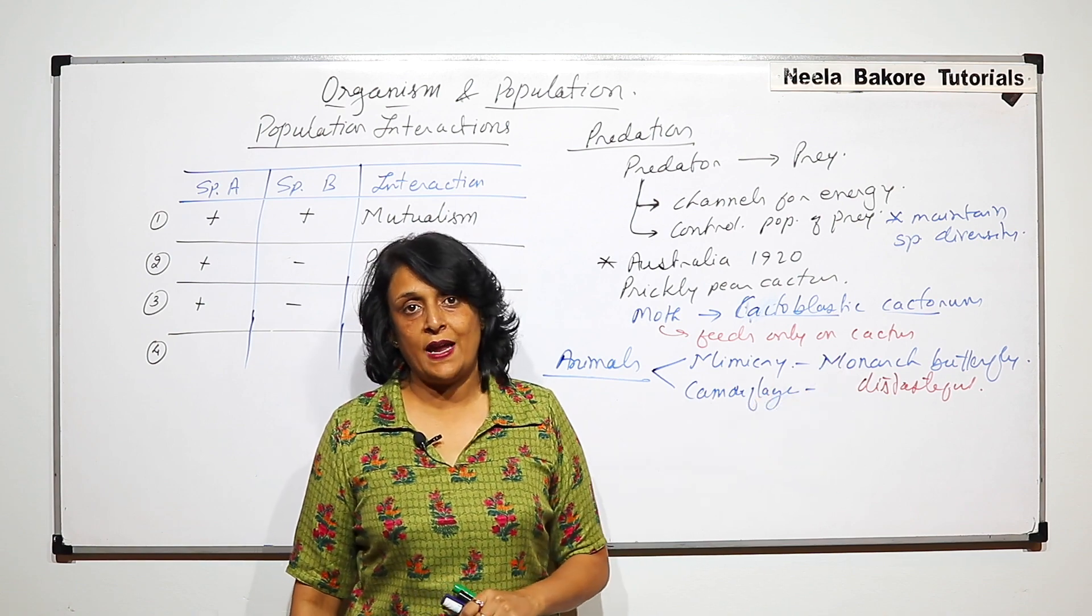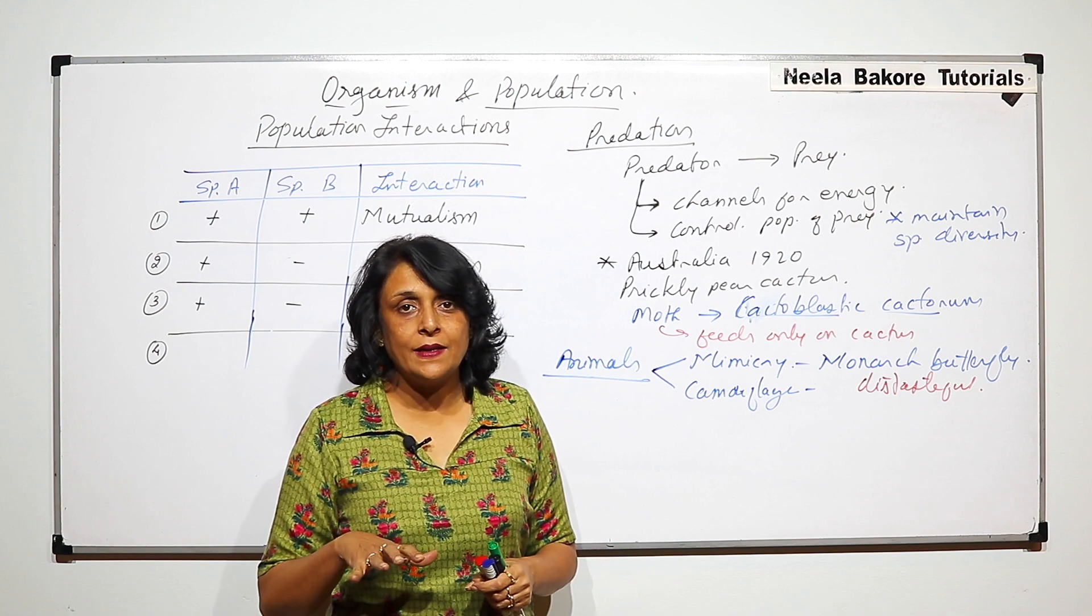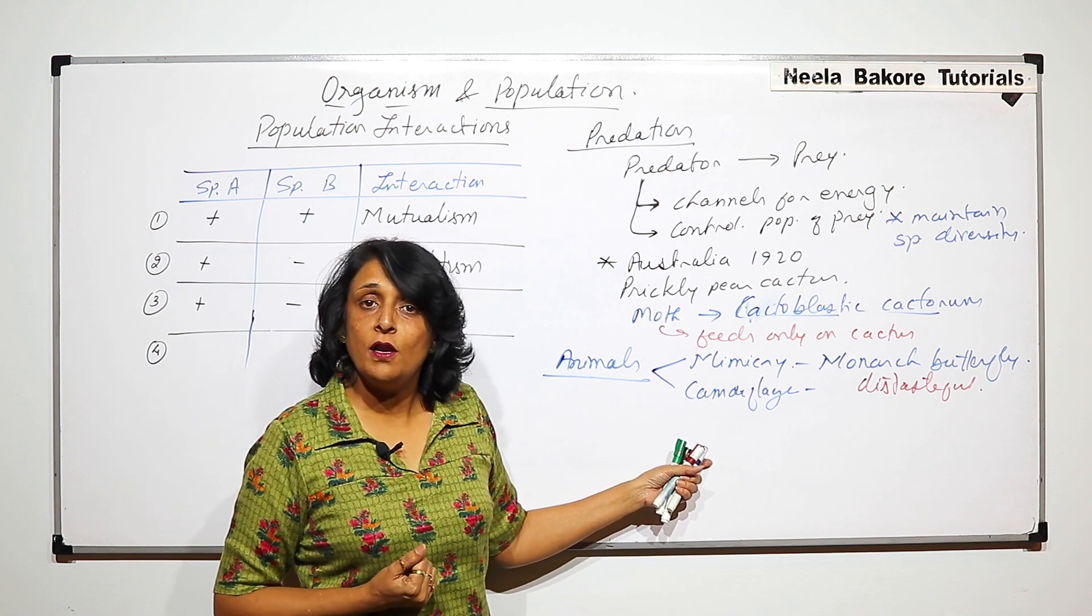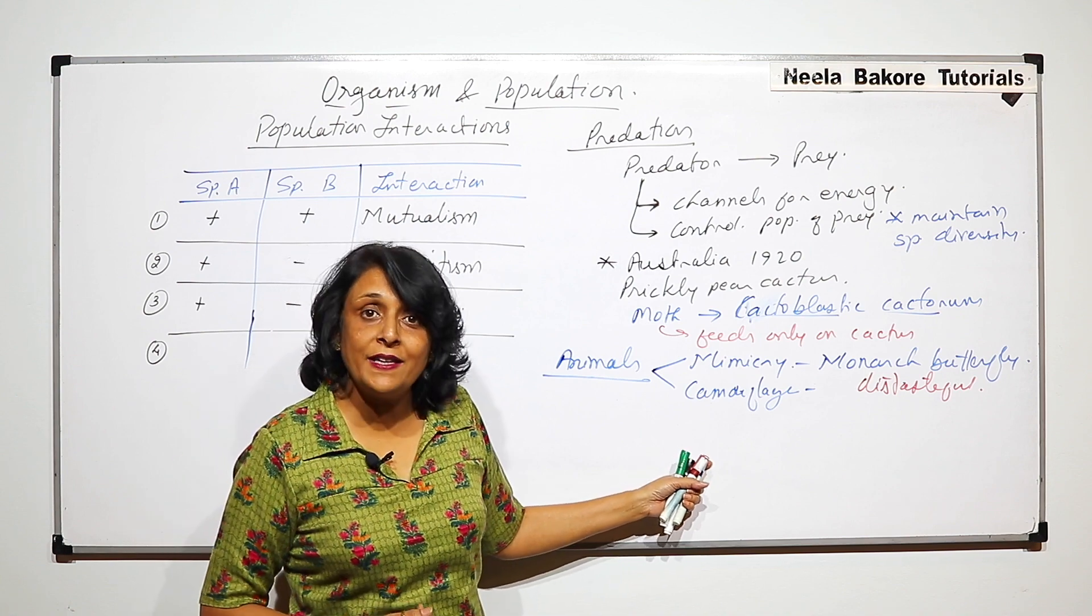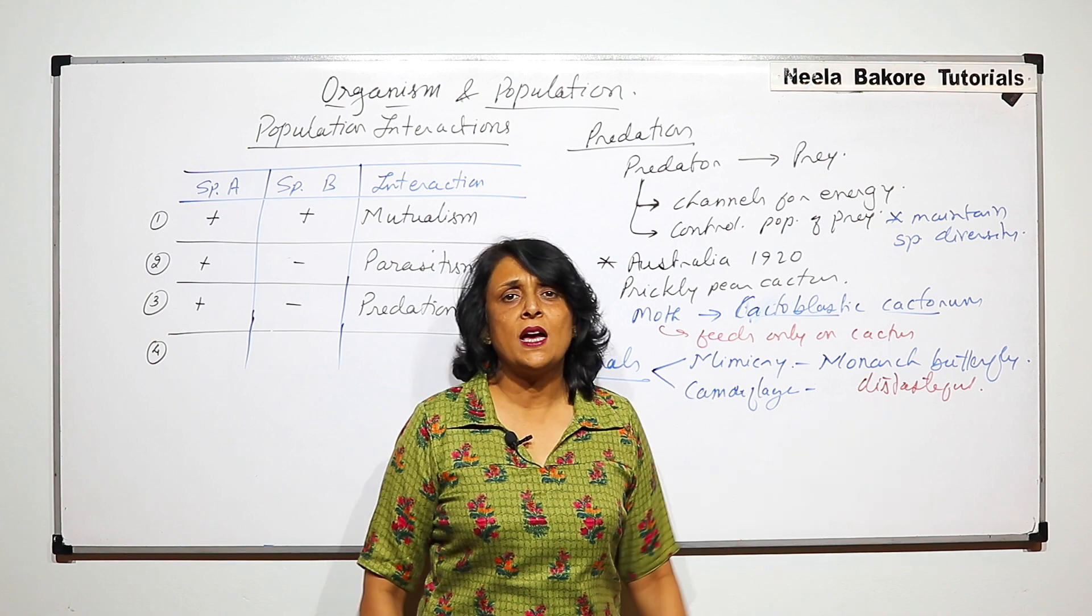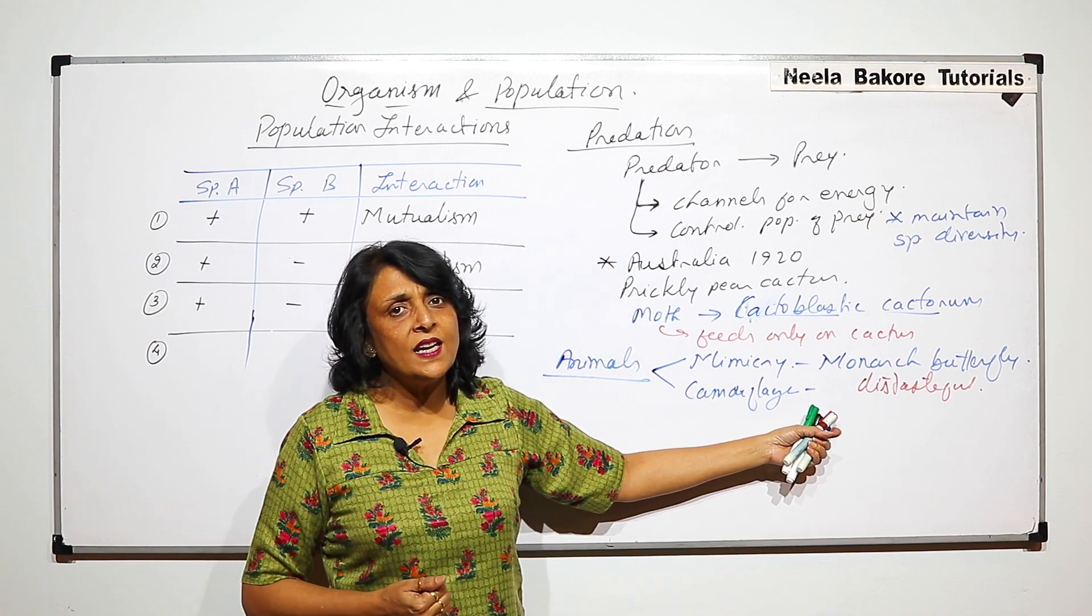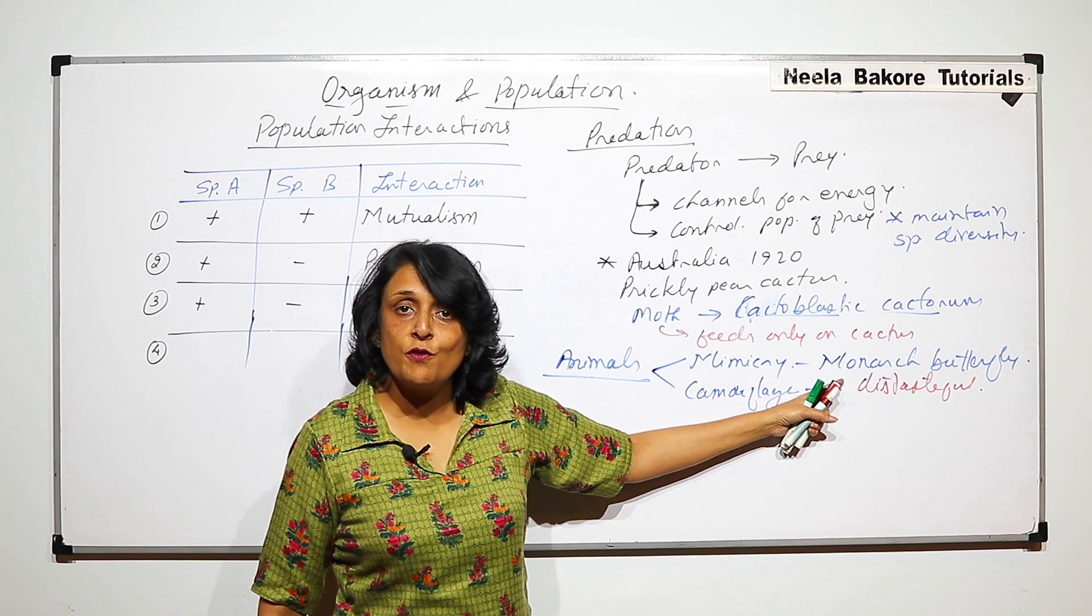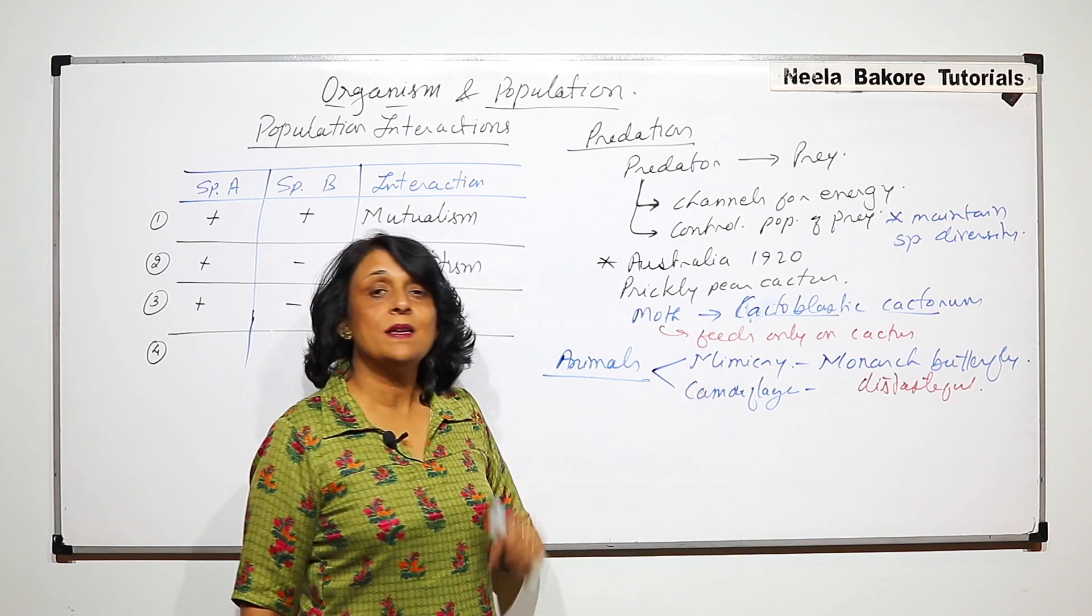If a bird sees that color pattern, the birds assume that this is also that distasteful butterfly and they leave it. So they are able to defend themselves. These butterflies—the ones which are not distasteful, they are normal butterflies, they can be easily consumed—but by mimicking a distasteful butterfly they are able to defend themselves. This is mimicry.